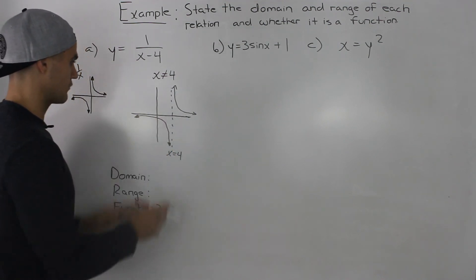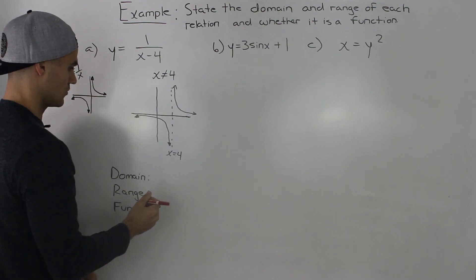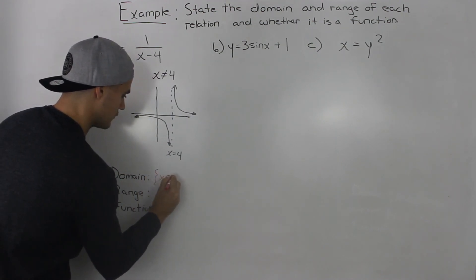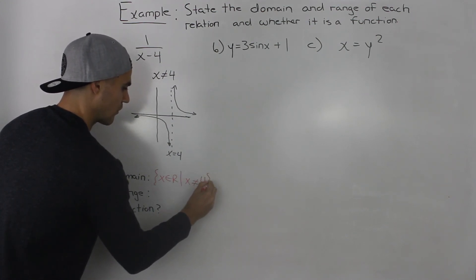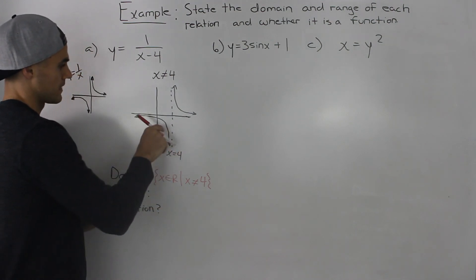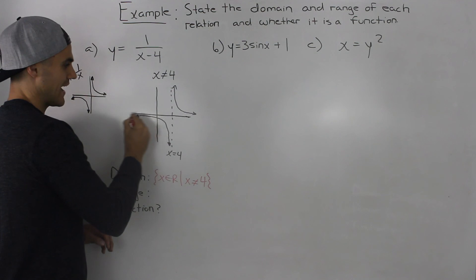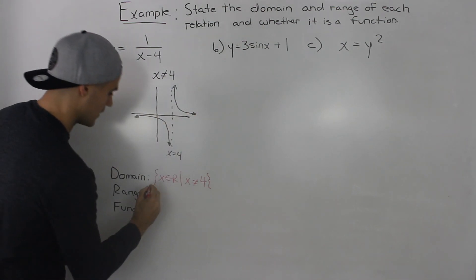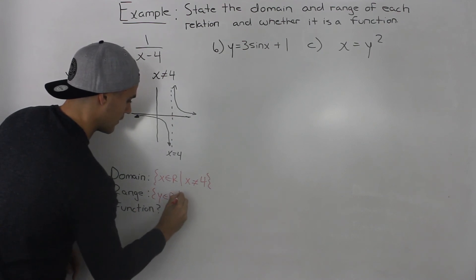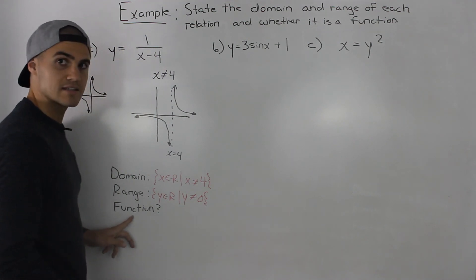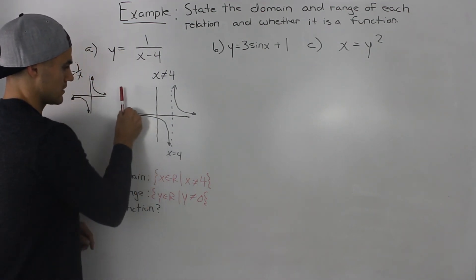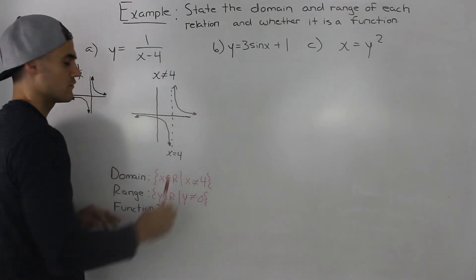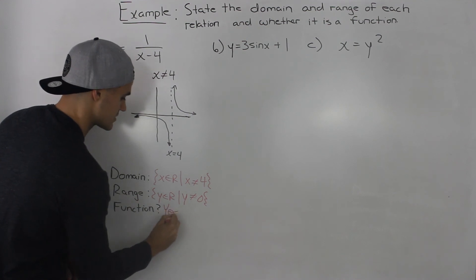The domain of this graph: x can be any value except 4, so the domain is x is an element of real numbers, however x cannot equal 4. For the range, the y values can be anything but there is a horizontal asymptote at y = 0, so the graph never touches y = 0 — y can be anything except y cannot equal 0. Running a vertical line through the graph, there are never two points touching the vertical line, so it passes the vertical line test. It is a function.